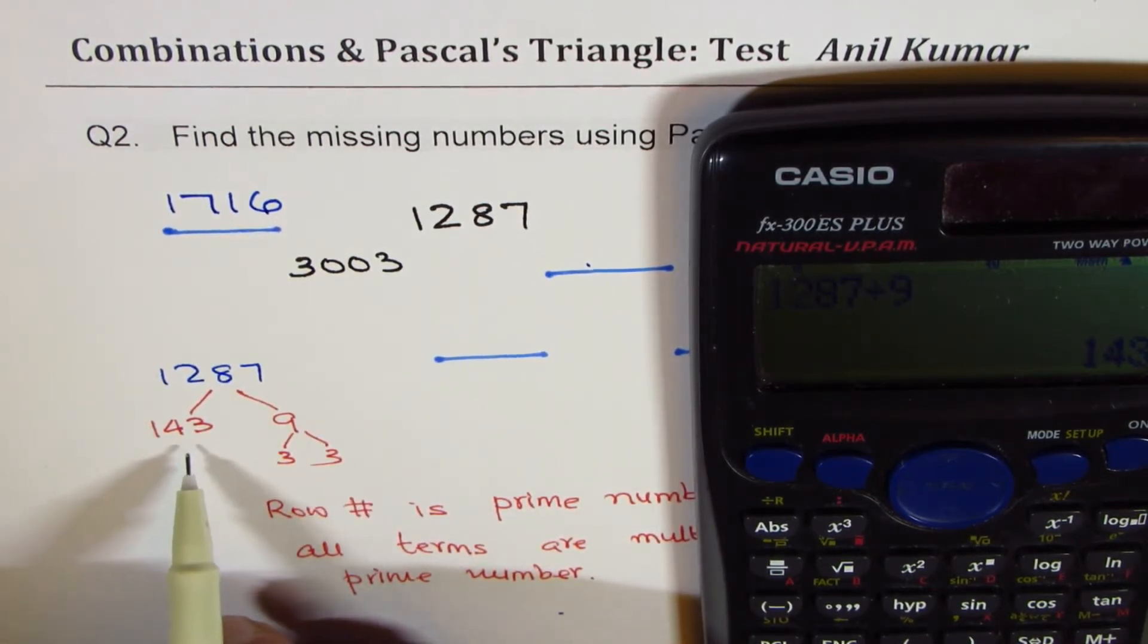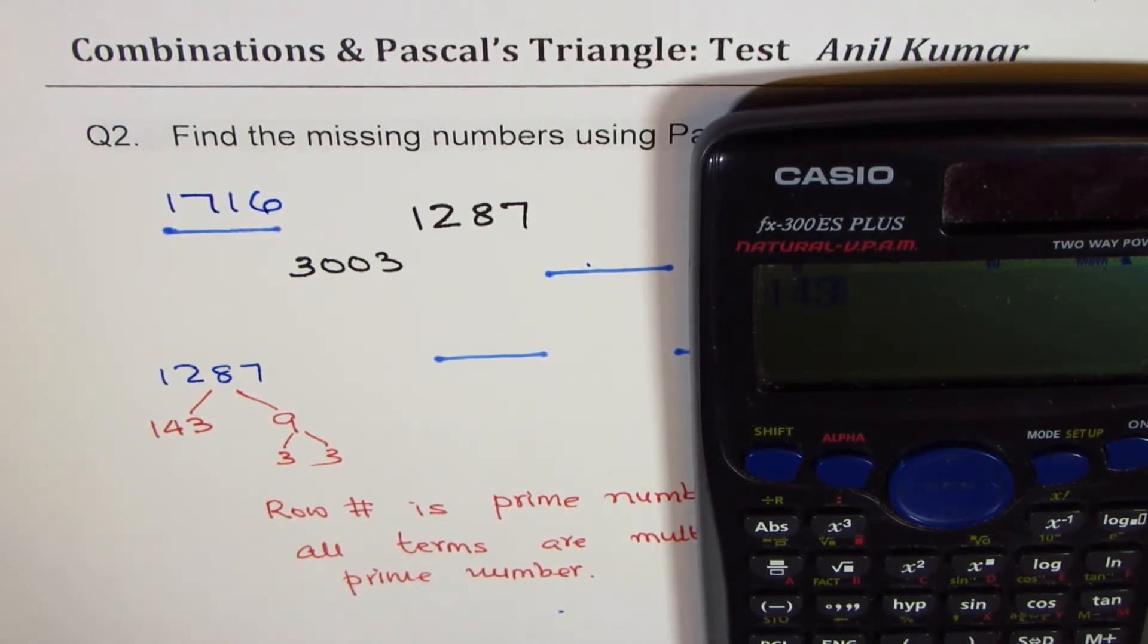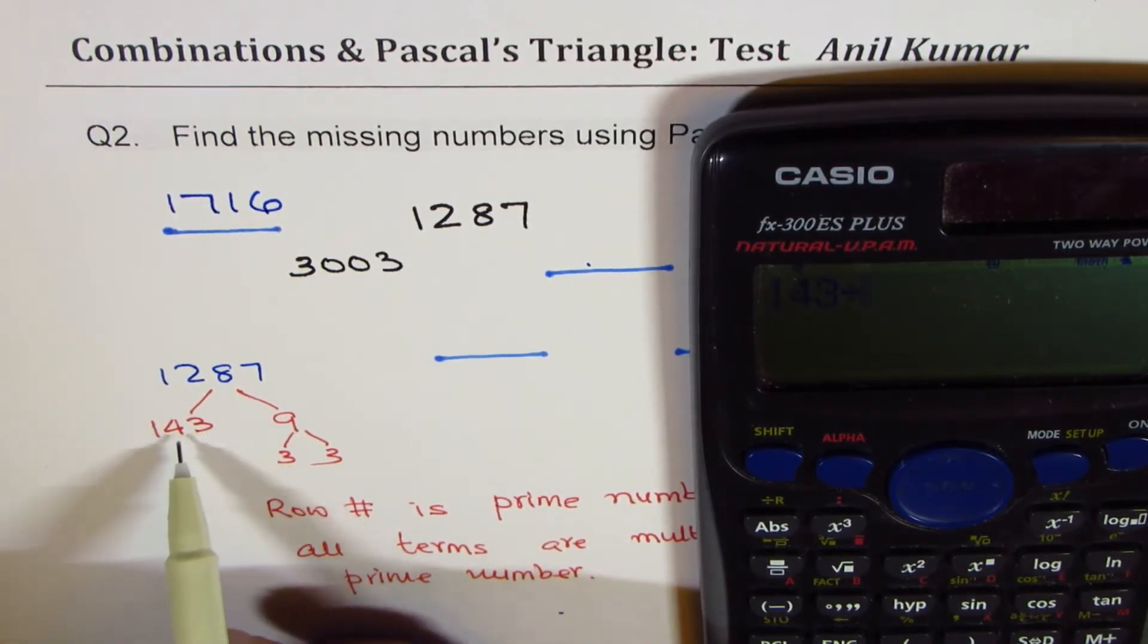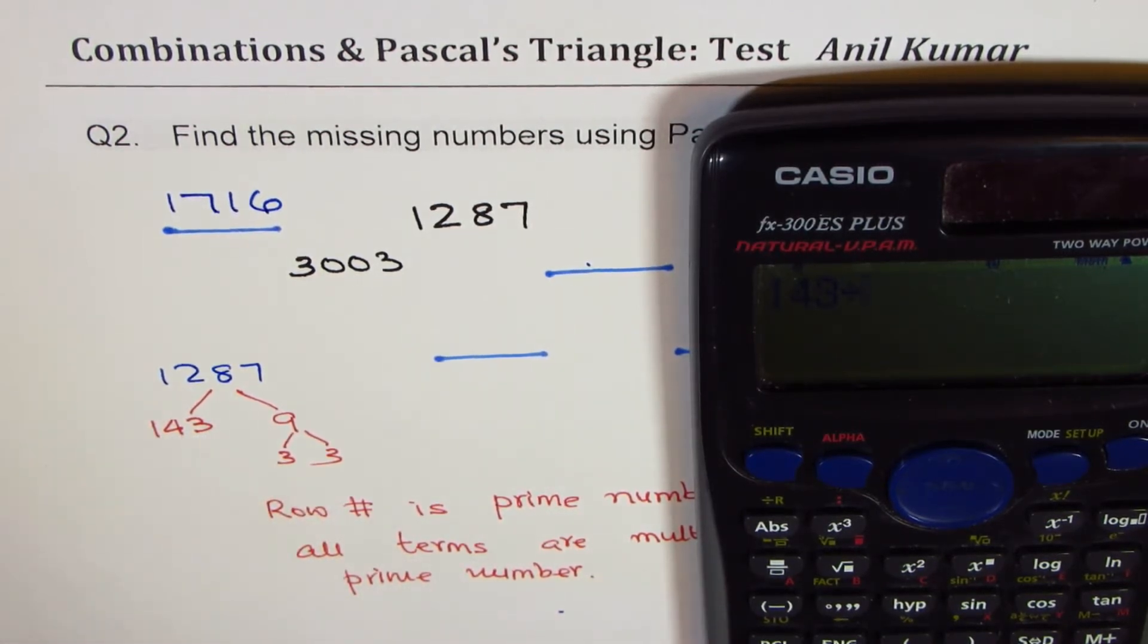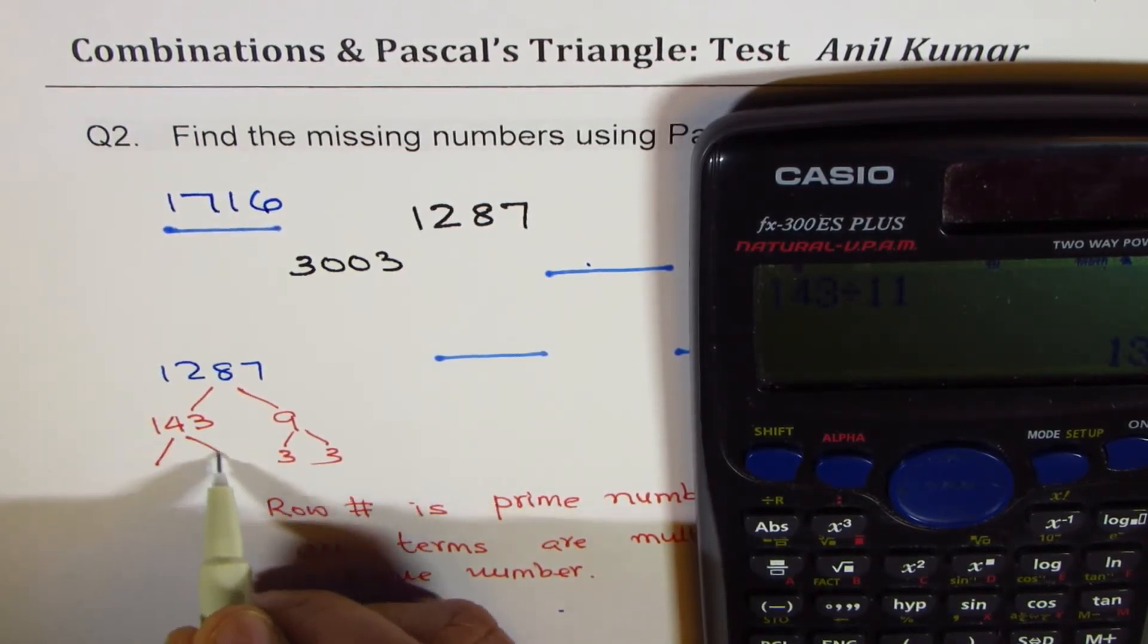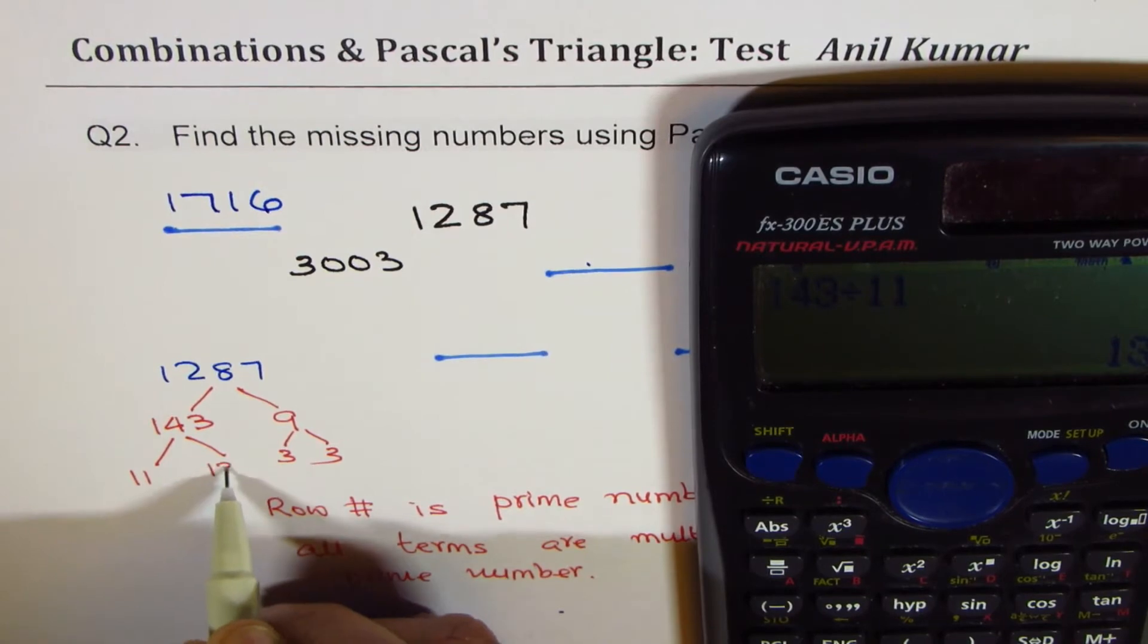Now 143, so try it out. So 143 divided by 11. 1 plus 3 is 4 and then this is 4, by 11 is 13. So what we get here is 2 numbers, 11 and 13.